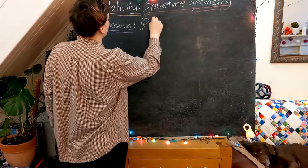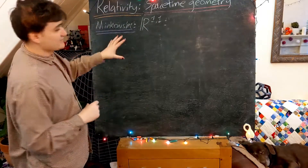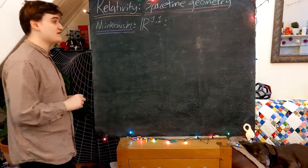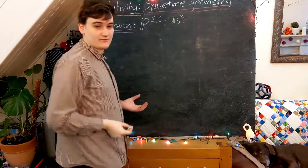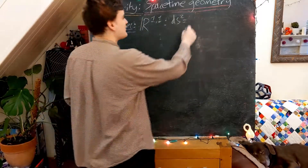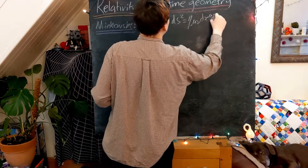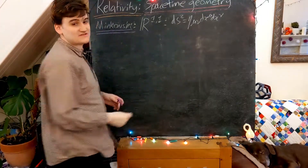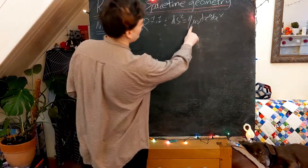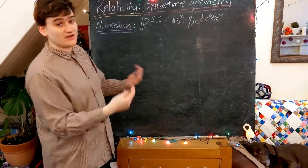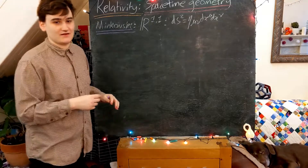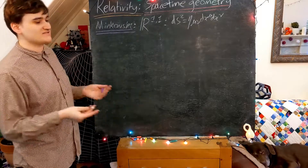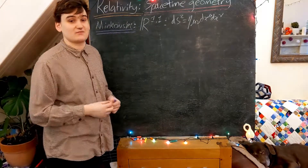We're looking at R1,1 and we're going to study the Minkowski geometry, which was defined by giving the Minkowski metric. The Minkowski metric is given the name eta by definition. The Minkowski metric components are defined with the first component equal to minus 1, which represents the time metric component, because by convention we always choose our zero coordinate to represent our time coordinate.